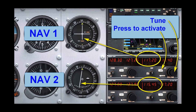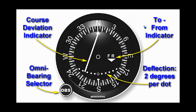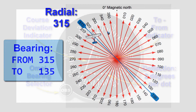This instrument is called a Course Deviation Indicator. How it works is we rotate this bearing selector knob, which rotates the scale. We do that until the needle is exactly vertical, and that means we have found the radial we are currently on. It also has a To and From indicator, and there can be two situations, as in this picture.